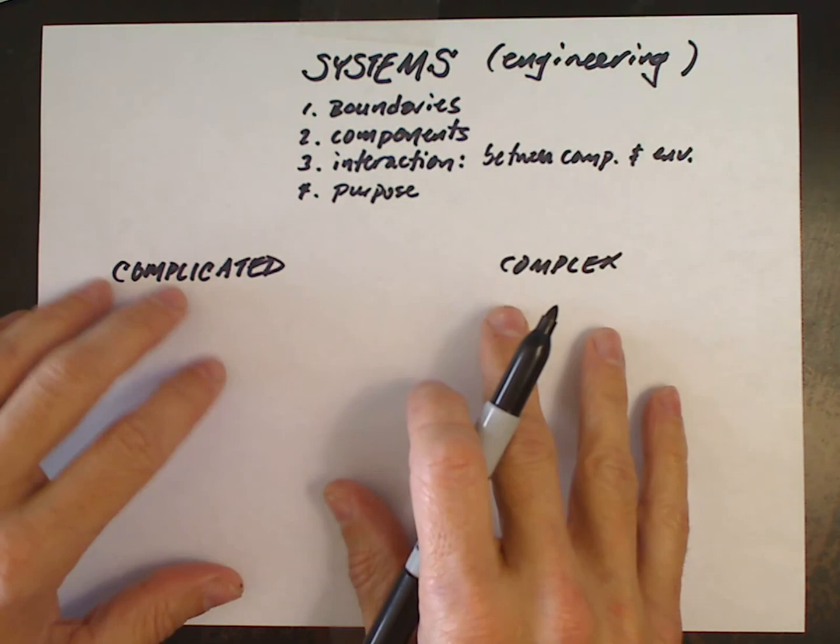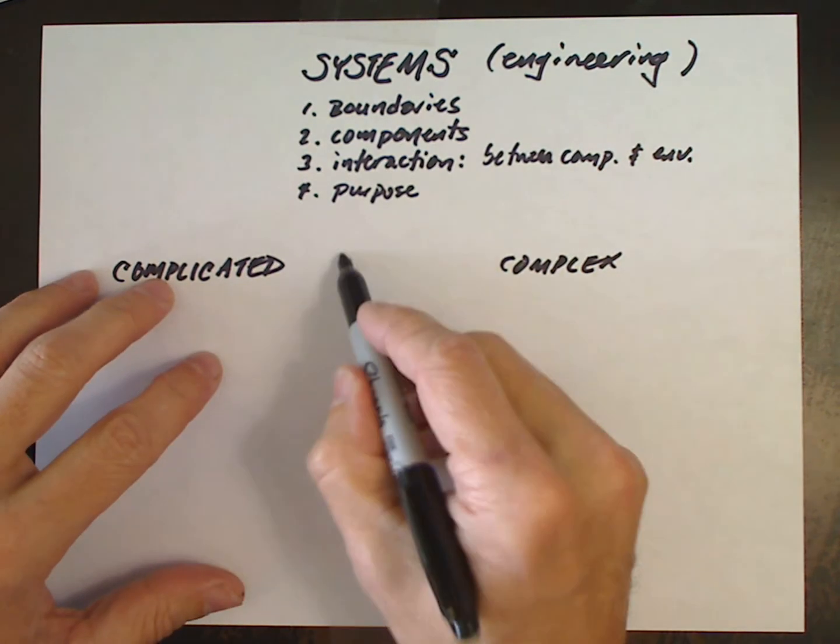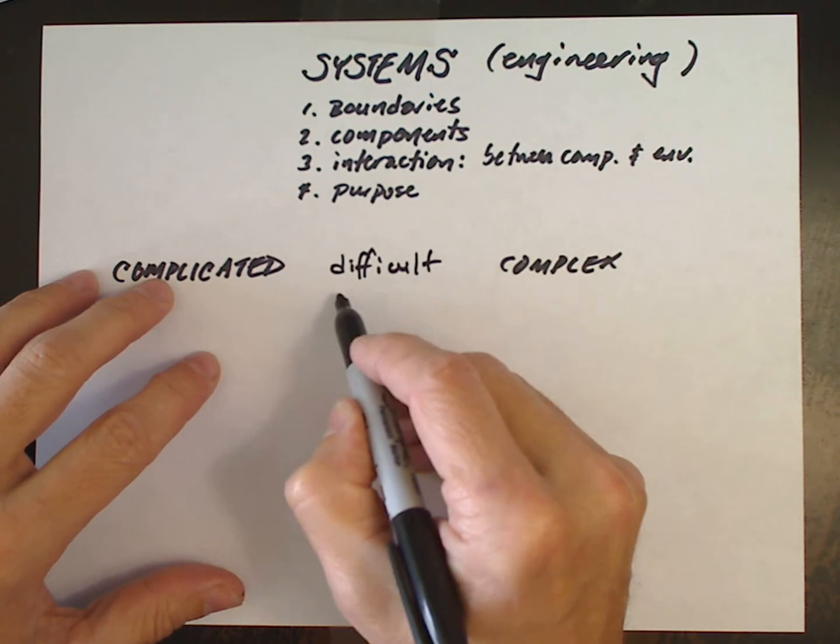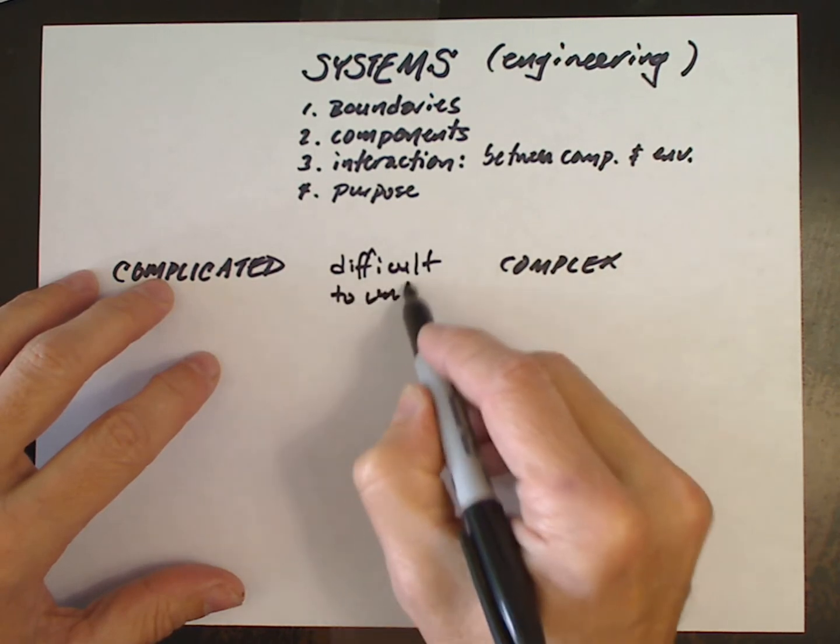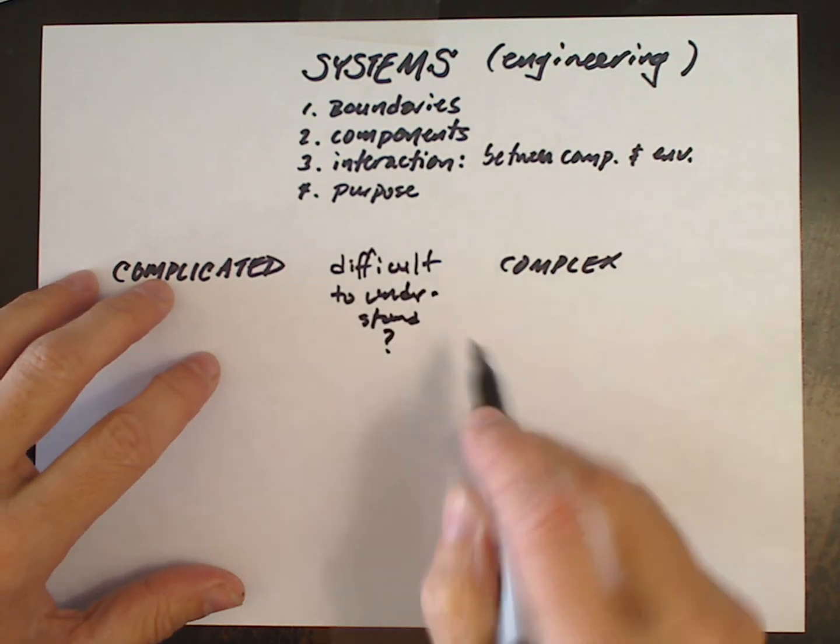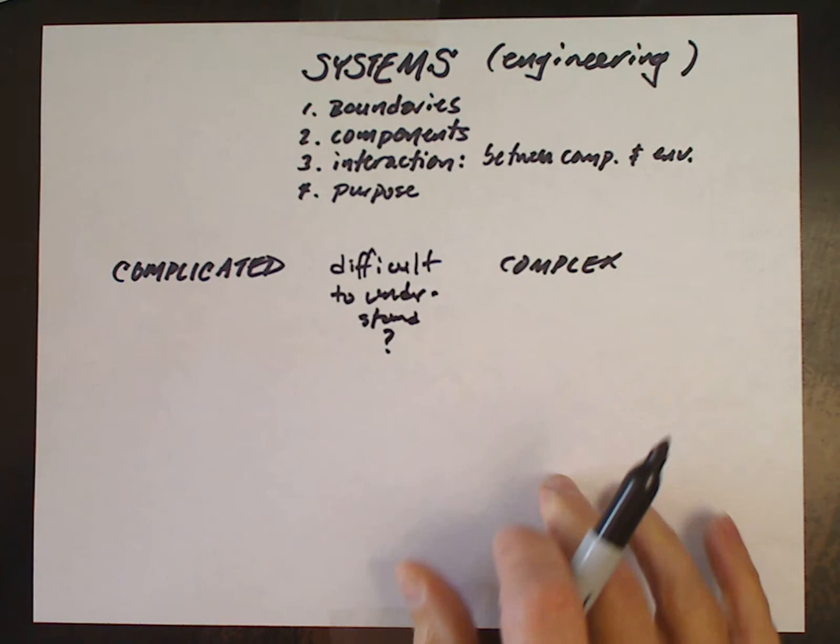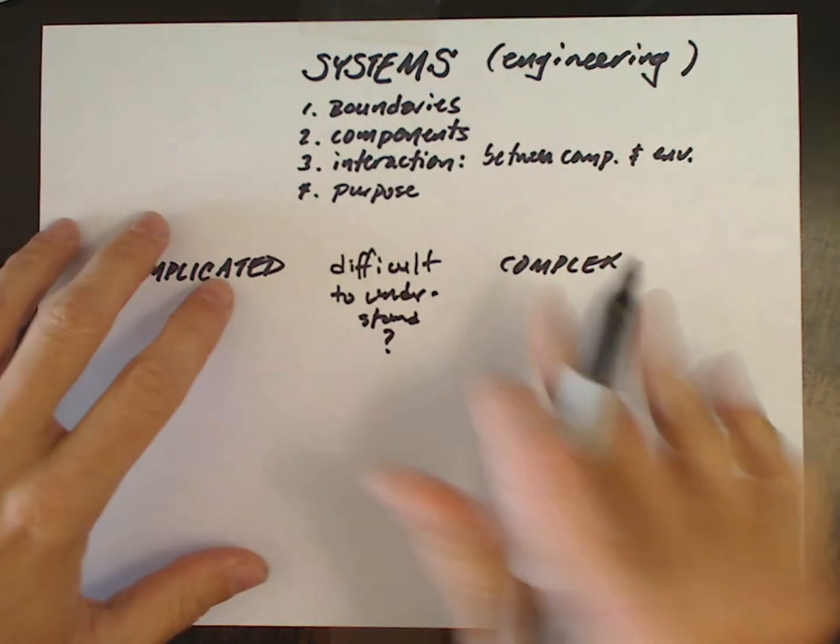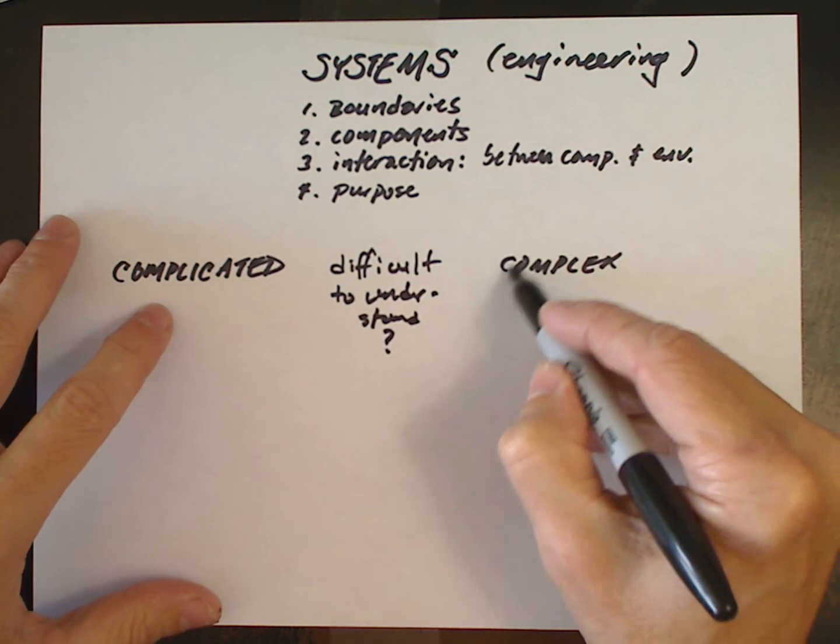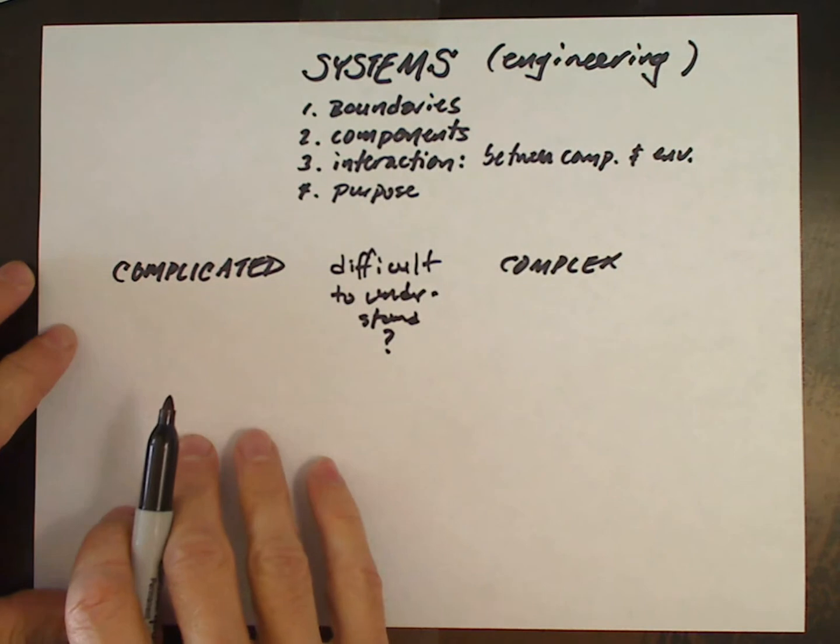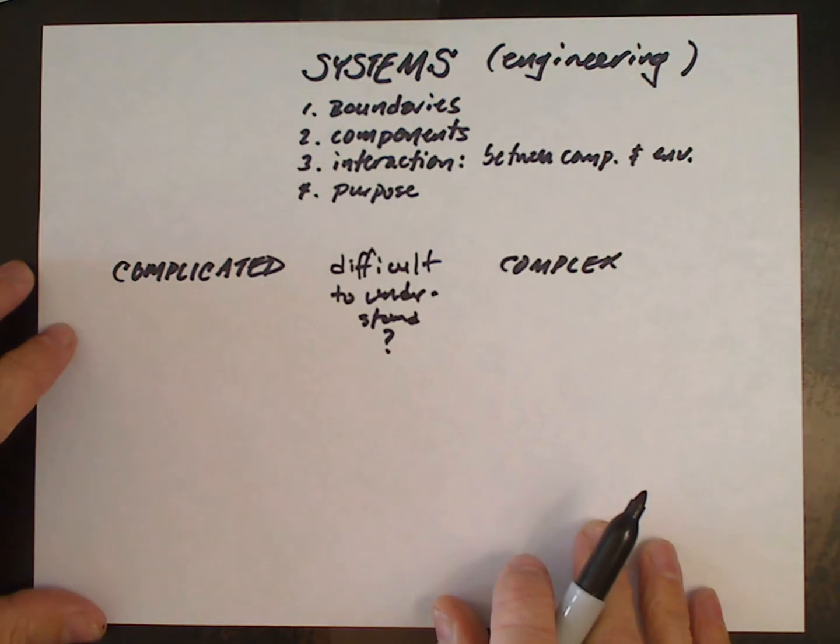So these two words, complicated and complex, which are often used as synonyms for the phrase just difficult to understand, these two words give us a way of making distinctions about how to think about a system, and they lead to different understanding of the causal mechanisms that explain the phenomena we observe. So we're going to understand what's complicated and what's complex.